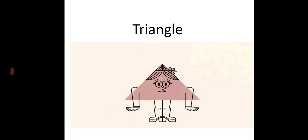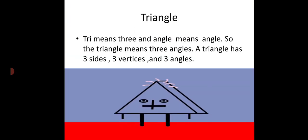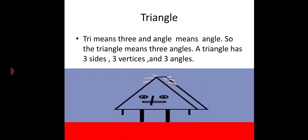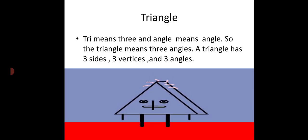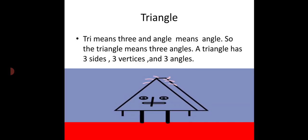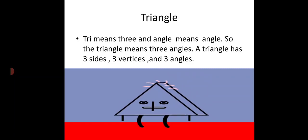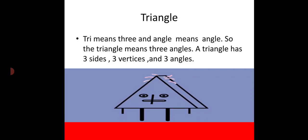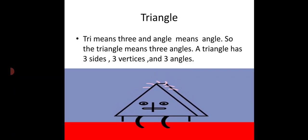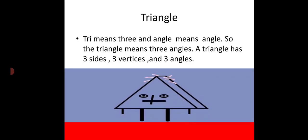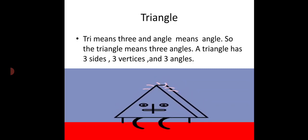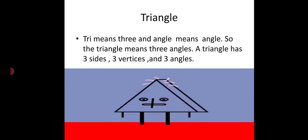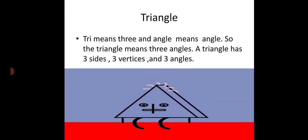Now, our topic is Triangle. What is a Triangle? Tri means three and angle means angle. So the triangle means three angles. A triangle has three sides, three vertices, and three angles.